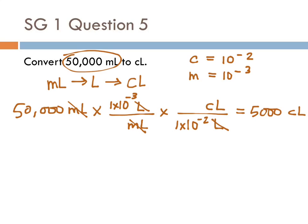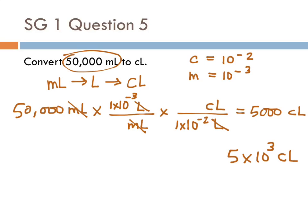How many significant figures should that answer have? How many did 50,000 have? Are those trailing zeros significant? There's no decimal point, so they're ambiguous — we're not sure if they're significant or not. So we're going to assume the worst and say they're not. 50,000 has only one significant figure; those zeros we're not sure about. So over here, when we write 5,000, those are also ambiguous zeros. You gave us an ambiguous number; we'll hand one right back to you. I still think it's better to put that in scientific notation: 5 times 10 to the third centiliters. But either of these answers would be considered correct.